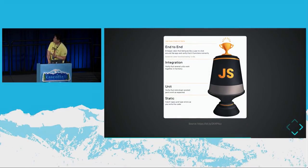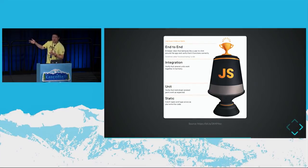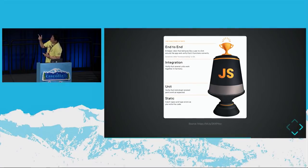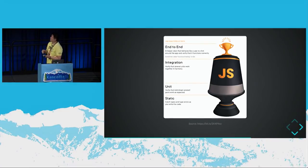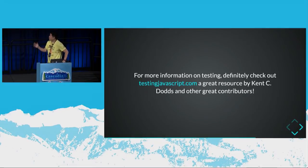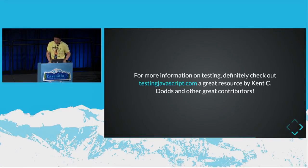From testingjavascript.com — an amazing resource — the different testing layers break down like this: for static tests to catch typos and errors, we use TypeScript. For unit tests, we use Jest. For integration tests, we use Jest again. For end-to-end, we're experimenting with Jest and Puppeteer, though Puppeteer only supports Chrome, which is one issue we're looking into. Definitely worth checking out testingjavascript.com — a great resource by Kent C. Dodds and other contributors.